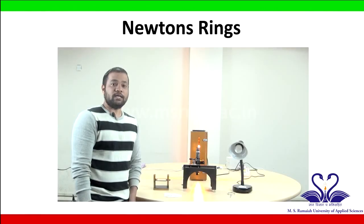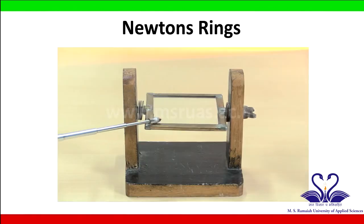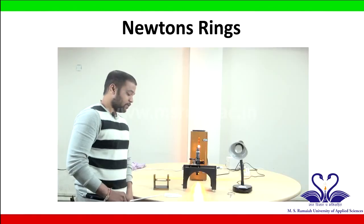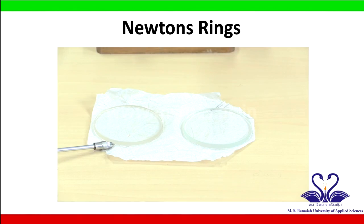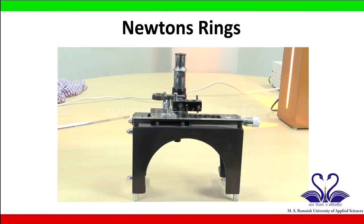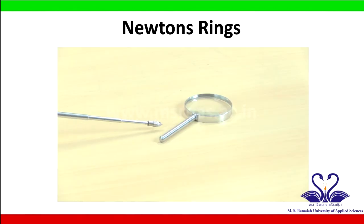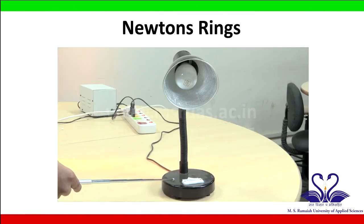Hello students, in this experiment we are going to determine the radius of curvature of a plano-convex lens using Newton's ring apparatus. The required apparatus includes: a 45 degree reflector, Newton's ring apparatus consisting of a plano-convex lens and a plane glass, a travelling microscope, a sodium vapour lamp, a magnifying lens, and a steady lamp.